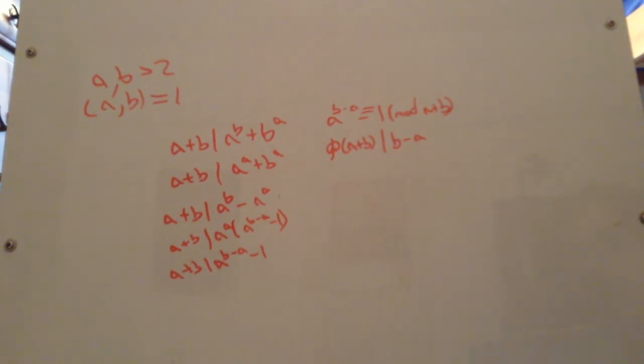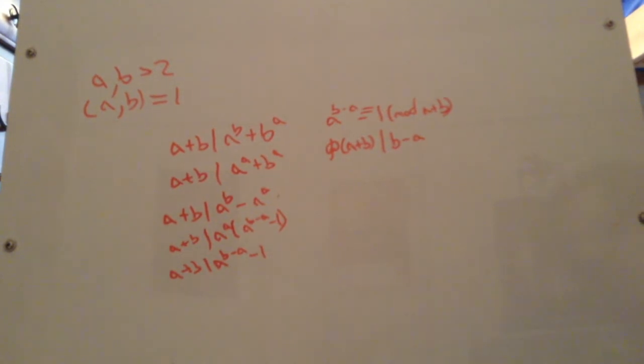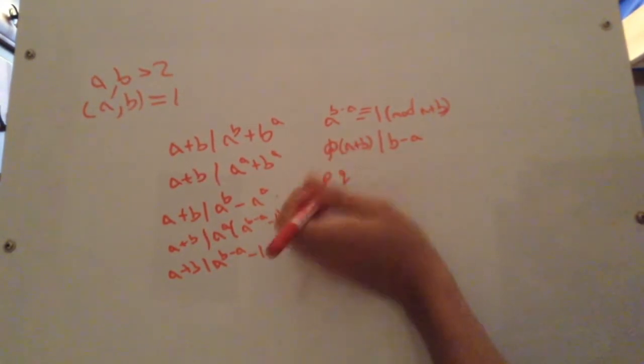We want to find something nice and simple. But first off, we need to know, is a plus b even or odd? Well, let's see what happens if a plus b is odd. If a plus b is odd, it has all odd factors, p, q, etc.